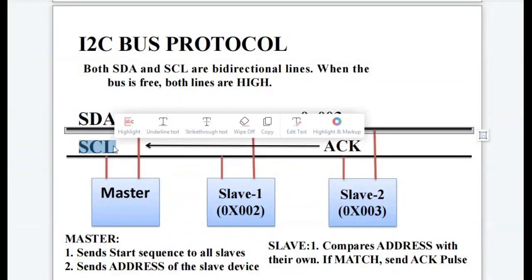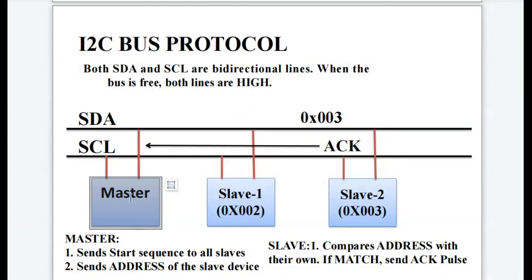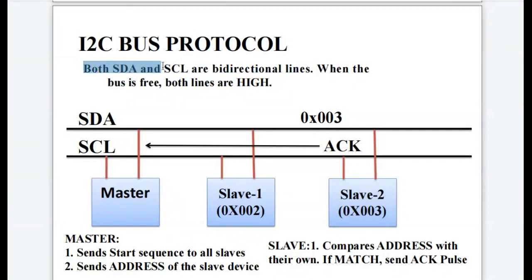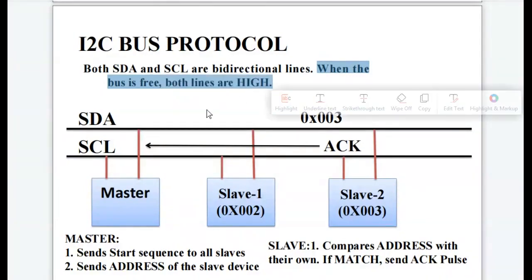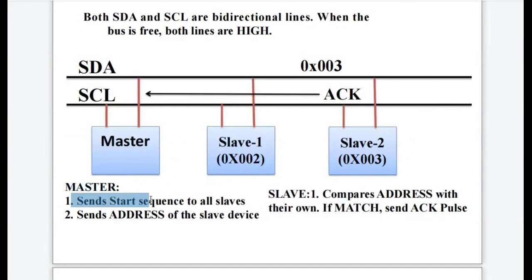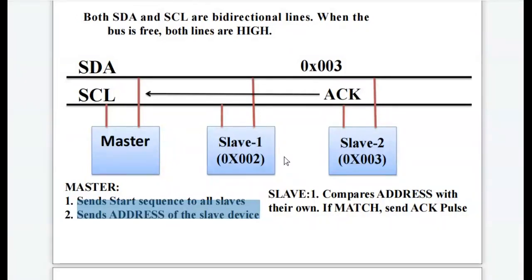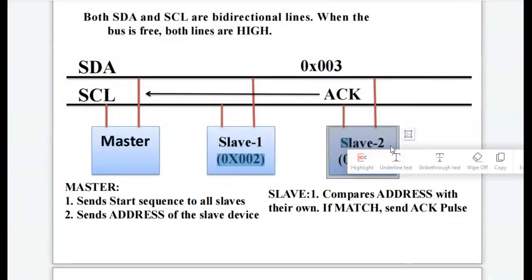In I2C protocol, there is one master device and two slave devices. Both the SDA and SCL are bi-directional lines. When the bus is free, both lines are high. The master sends a start sequence to all the slaves on the I2C bus, along with the address of the slave it wants to communicate with. For example, here the master wants to communicate with slave device 2 having address 0x003.